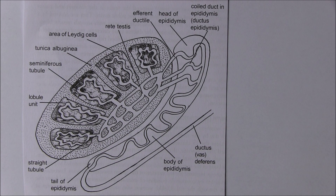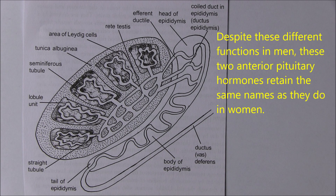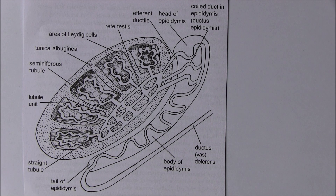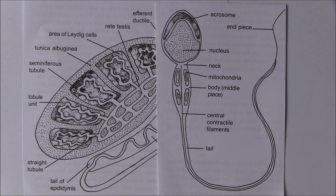Puberty also occurs in boys. Here we have a picture of the testes showing the effects of hormones. At puberty, testosterone and sperm production are stimulated under the influence of anterior pituitary gonadotrophins — luteinizing hormone and follicle-stimulating hormone — just as in females. In men, it is FSH that stimulates spermatogenesis, the formation of sperm, while luteinizing hormone stimulates testosterone secretion.